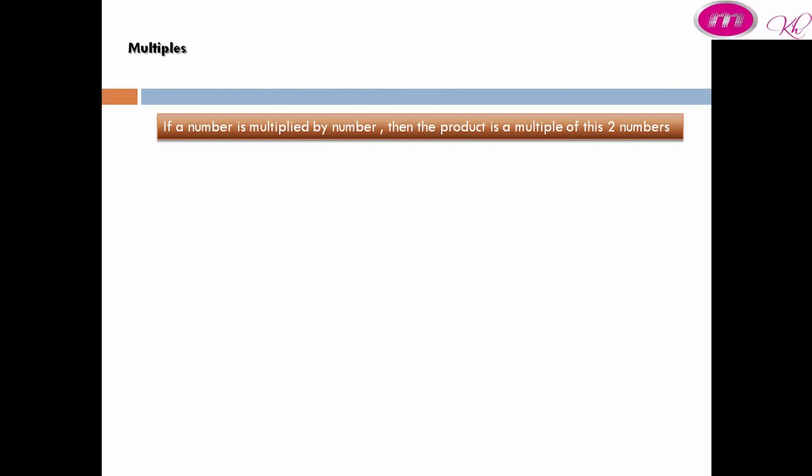Multiples: what are multiples? If a number is multiplied by another number, then the product is a multiple of these two numbers. For example, 5 times 2 equals 10, so 10 is a multiple of 2, and 10 is also a multiple of 5.